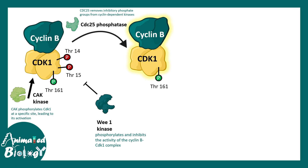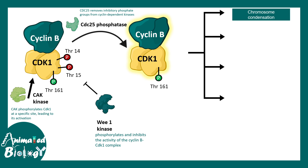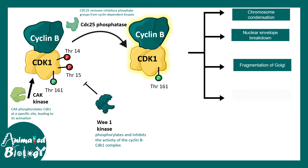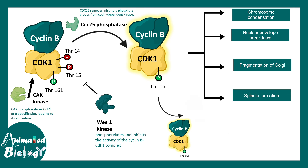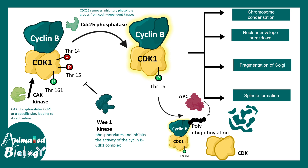When cyclin B and CDK1 are activated, they drive biological functions including chromosome condensation, nuclear envelope breakdown, fragmentation of the Golgi apparatus, and spindle apparatus formation. After its job is done, cyclin B is degraded via polyubiquitination by the anaphase-promoting complex, marking it for proteasome-mediated degradation.